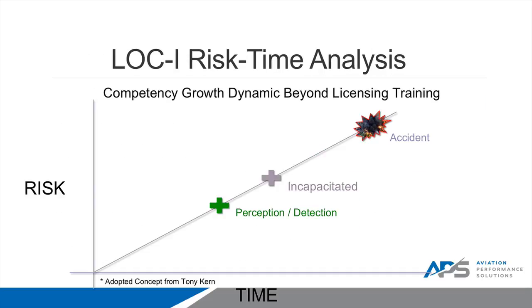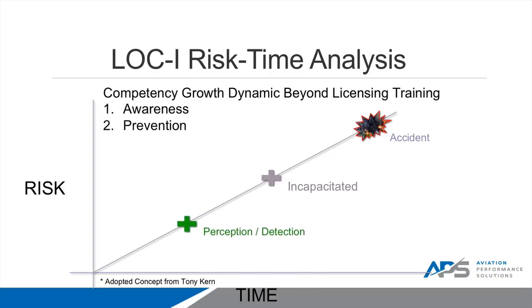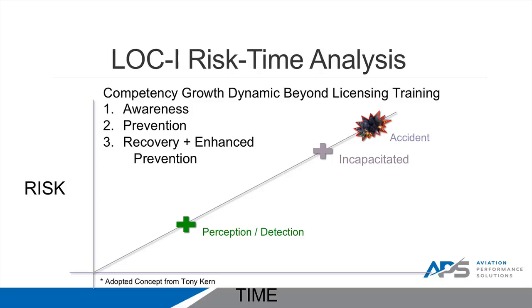Let's look at the loss of control in flight risk time analysis. Competency growth is dynamic beyond licensing training — into advanced training and the UPRT environment. When you look at a beginning pilot, the gap between perception and detection of a crisis and the point at which he is incapacitated is very narrow, and beyond incapacitation, an accident is destined to occur. Through advanced UPRT training, awareness increases. The spread between perception, detection, and incapacitation increases as well. UPRT is about earlier perception and detection and a better ability to handle an event before incapacitation is even a factor.